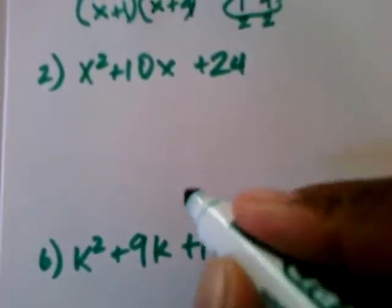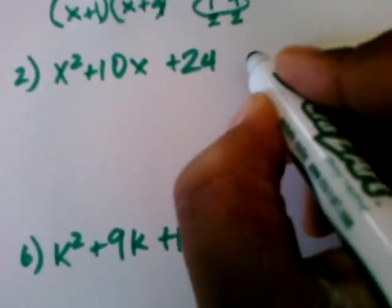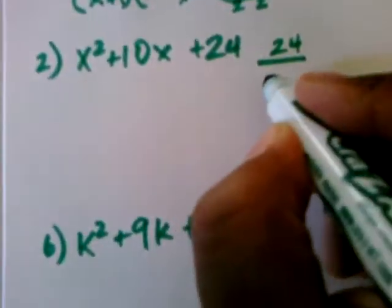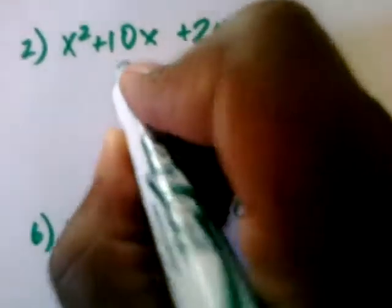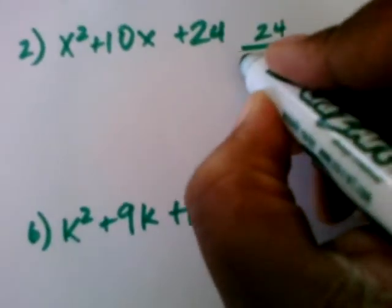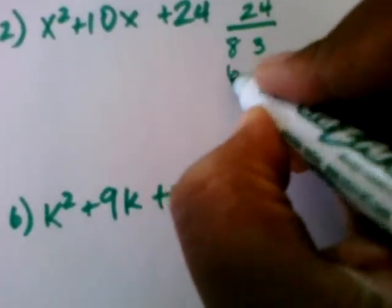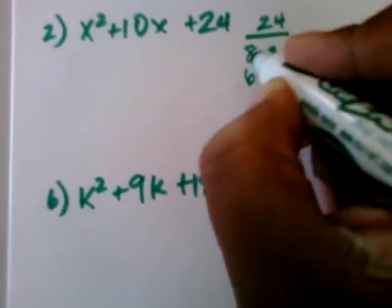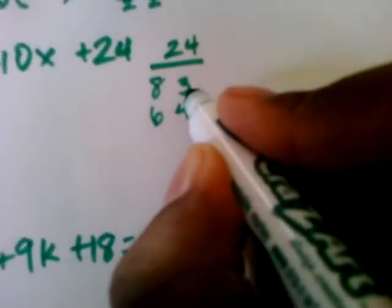Let's look at our next problem. I have a constant of 24, and so I'm trying to find the factors of 24 that will equal 10. Well, I know 8 times 3 is 24. I know 6 times 4 is 24, and 1 times 24, and so forth. If I add the 8 and the 3 together, I get 11.